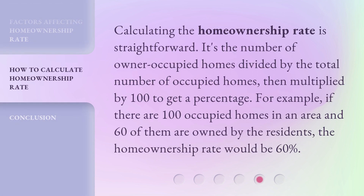Calculating the homeownership rate is straightforward. It's the number of owner-occupied homes divided by the total number of occupied homes, then multiplied by 100 to get a percentage. For example, if there are 100 occupied homes in an area and 60 of them are owned by the residents, the homeownership rate would be 60%.